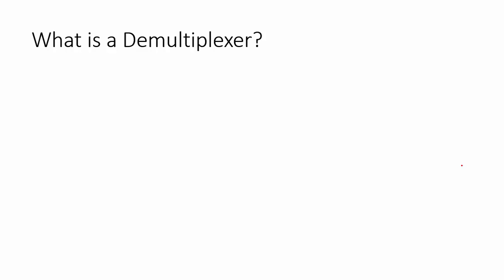So what is a demultiplexer? A demultiplexer is a combinational circuit that has one input, 2^n outputs, and n select lines. The information present on the input data line is passed on to one of the outputs depending on the combination of the select lines.